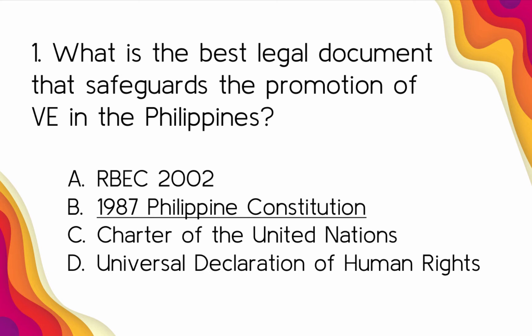It also mandates developing moral character and creative thinking, broadening scientific and technological knowledge, and promoting vocational efficiency in the three levels of education: elementary, secondary, and tertiary. Option A, RBEC 2002, provides for stronger implementation of competencies and values across learning areas. Option C established the United Nations. Option D represents the first global expression of rights all human beings are inherently entitled to.